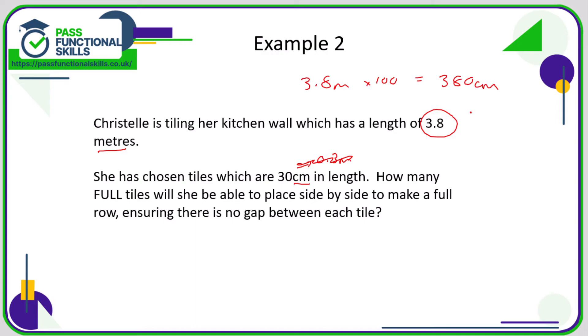All we need to know is how many 30 centimeters go into 380, so our calculation is 380 divided by 30. If we do that on a calculator we'll get the answer 12.6 recurring. Therefore the number of full tiles is 12, because the 0.6 corresponds to two-thirds of a tile which is less than a full tile.